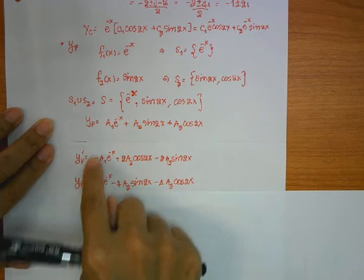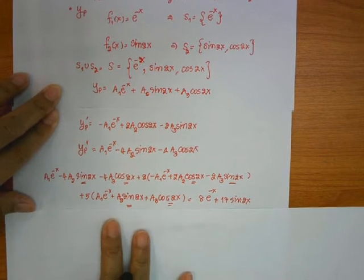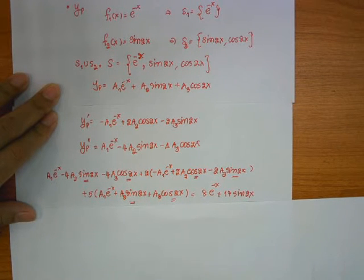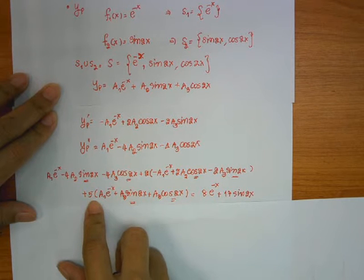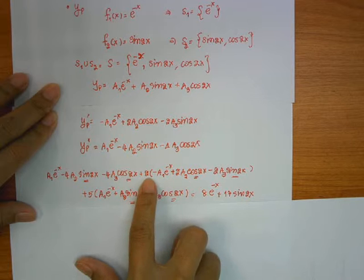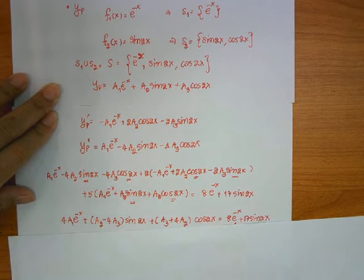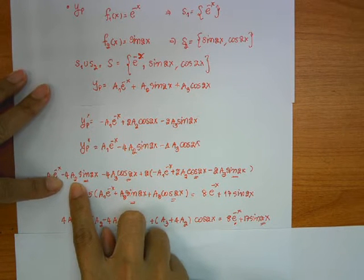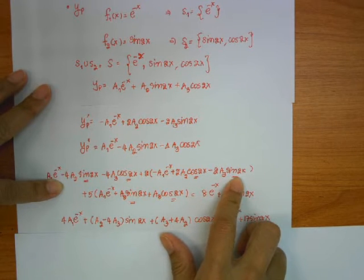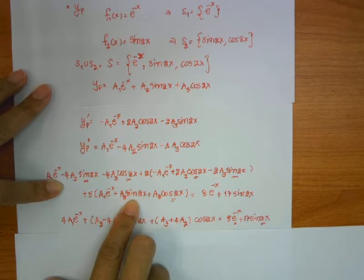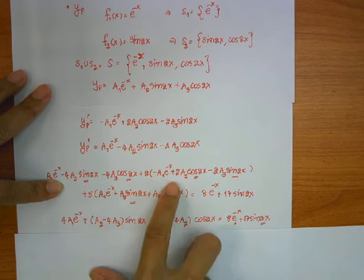After obtaining these terms, plug everything back into the differential equation. Looking at the exponential of minus x terms: a1 minus 2a1 plus 5a1 gives 4a1, so the exponential coefficient is 4a1. Looking at the sine 2x terms: 5a2 minus 4a2 is a2, so you get a2 minus 4a3, times sine 2x.